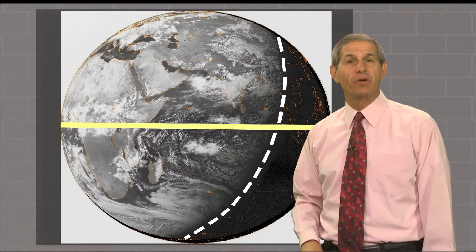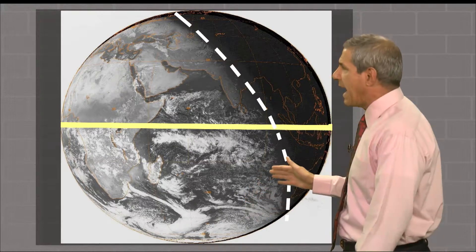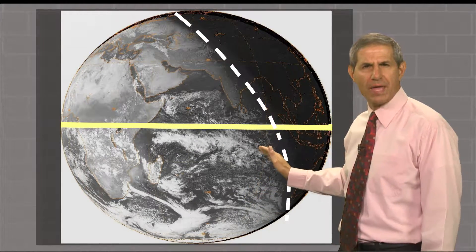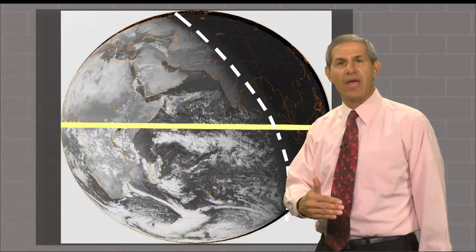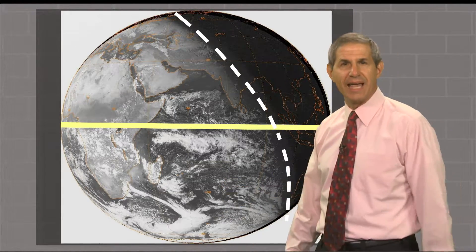And finally, here's that view, but on the first day of northern hemisphere winter. Now the terminator is sloped the other way, allowing more of the southern hemisphere than northern to be bathed in sunlight.